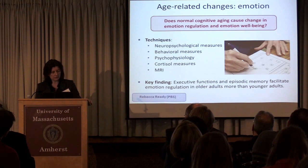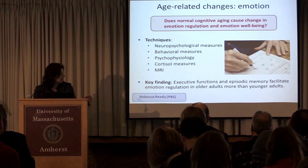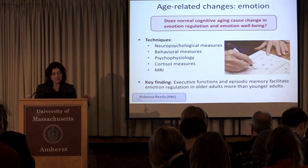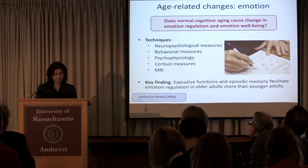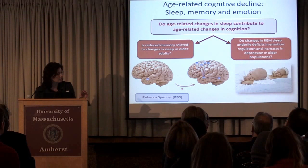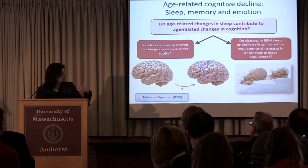Emotion is one domain that seems to improve with age, and this is an issue that Becky Reddy studies using behavioral, physiological, and neuroimaging measures. One interesting finding is that older people rely more on executive function and episodic memory for emotional regulation than younger adults. The lab of Becky Spencer integrates this work on memory and emotion to determine whether age-related changes in sleep are the driver of memory impairment and whether they generate emotion dysregulation in certain older people.